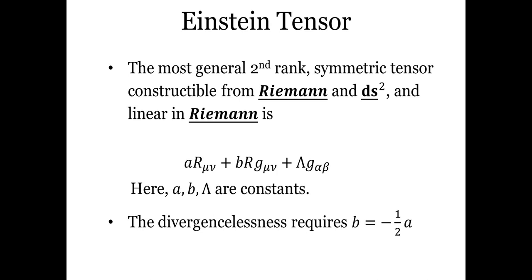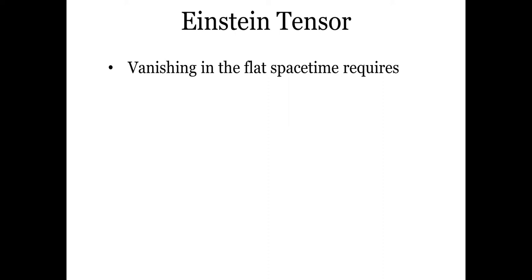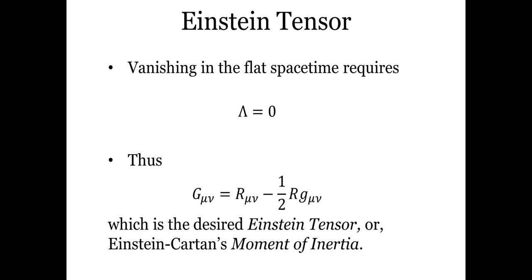We now impose divergence-lessness on this ansatz. Requiring zero divergence, we immediately get that B and A are related by B equals negative one-half of A. Imposing the first condition — that G must vanish in flat spacetime — we get lambda equal to zero. So the ansatz becomes the full-fledged definition: G_mu_nu equals R_mu_nu minus one-half times the scalar curvature R times g_mu_nu, which is the metric tensor. This is the familiar form of the Einstein tensor, also called the Einstein-Cartan tensor.